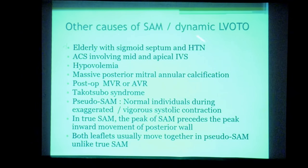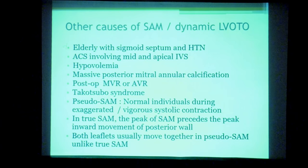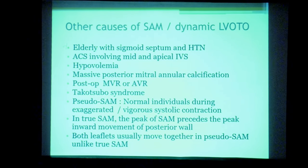Other causes of SAM include elderly patients with a sigmoid septum, acute coronary syndromes, hypovolemia, and Takotsubo syndrome. Pseudo-SAM is a normal phenomenon where vigorous contraction of the posterior wall moves the mitral leaflets anteriorly, but in pseudo-SAM the peak of the anterior motion coincides with the peak of posterior wall contraction, whereas in true SAM the peak precedes posterior wall contraction. Mitral regurgitation and LVOT obstruction are not features of pseudo-SAM.